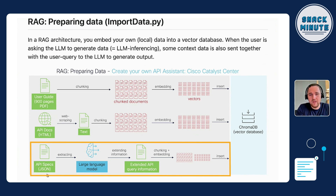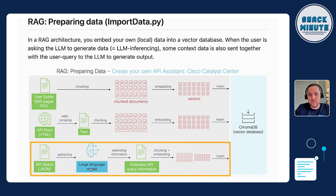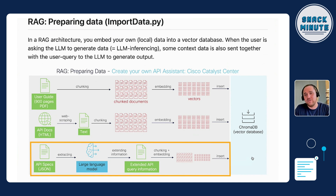The third source is the API specification — the classic API specification released from Catalyst Center. I also extended the API information or specification using a large language model, creating new data with the LLM to extend it and then insert it into the ChromaDB vector database.